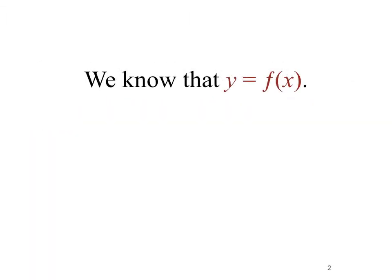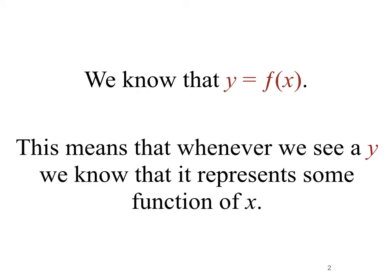We know that y equals f of x describes a function that has x as its independent variable and y as its dependent variable. This means that whenever we see a y, we know that it is represented by some function of x because y is dependent upon x.